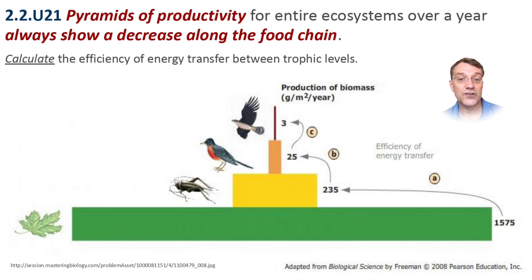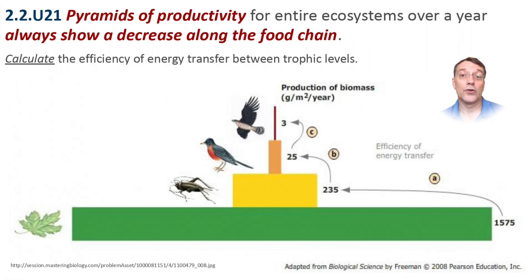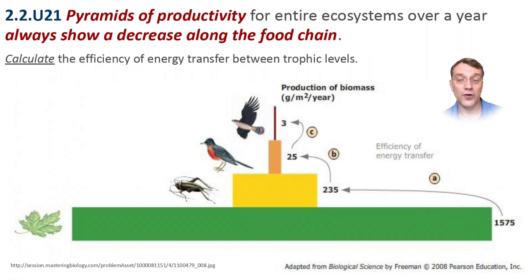The efficiency generally declines at higher trophic levels due to increasing energy demands for maintenance. In other words, top predators spend a greater proportion of their energy hunting for moving organisms than herbivores do wandering the landscape and eating plants that don't run away from them.